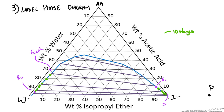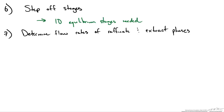The second part of the screencast asks us to find the flow rates of both the extract and the raffinate. We could use the lever rule and the mixture point, or we could do material balances since we know the compositions of both the raffinate and the extract. I am going to do the material balances to solve for our flow rates.